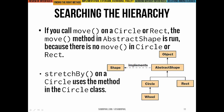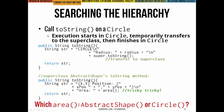On the other hand, if I call the stretchBy method, Java uses the corresponding method in the Circle class. And for toString: if I call toString on a Circle, we start executing in Circle's toString. But when we get to the part where we call super.toString, we temporarily transfer to the superclass and call abstract Shape's toString method. When that returns, we bounce back into Circle's toString method where we finish up.